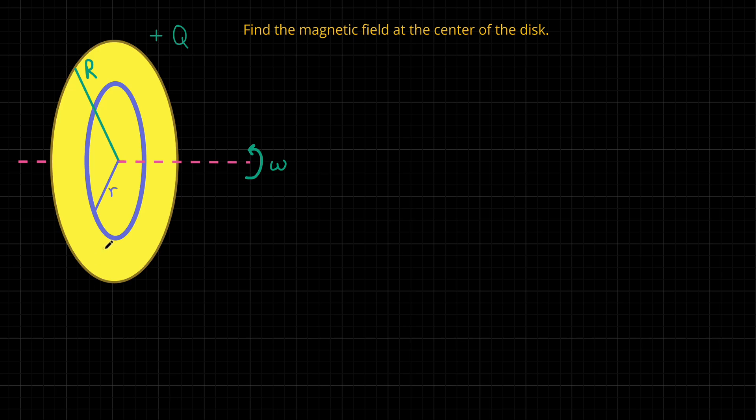And here is such a ring of radius lowercase r. So make sure you see the difference between capital R and lowercase r. Capital R is a constant, that is the radius of the entire disk. Lowercase r is the radius of a given ring, and we have many of these. We have an infinite number of these rings.